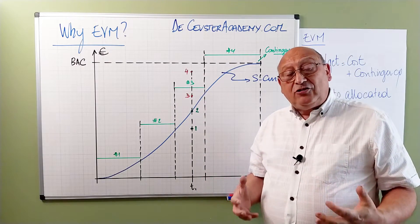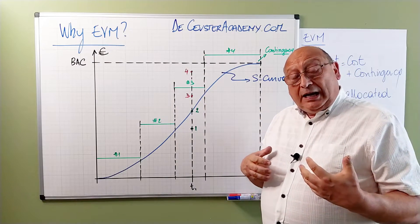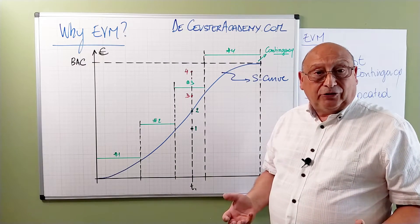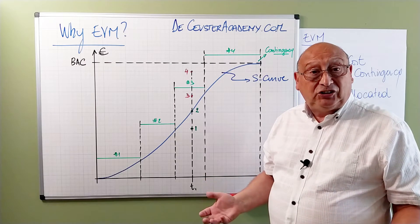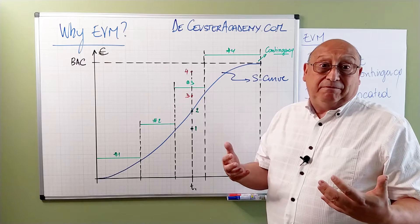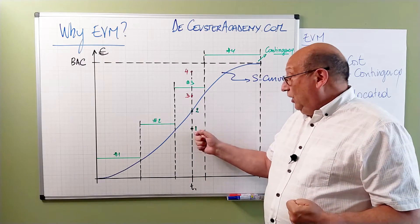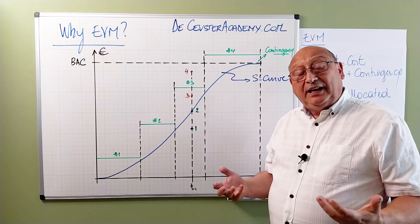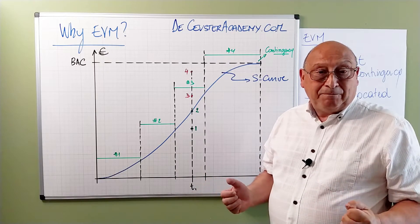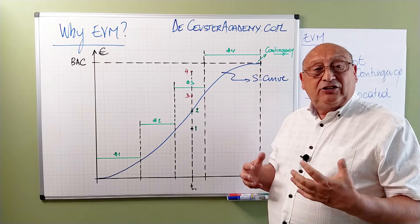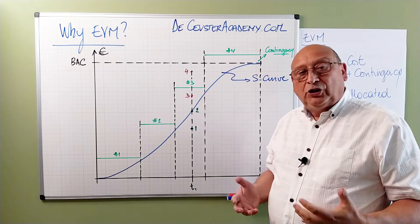Now just with this information we cannot interpret exactly what it means. Is point one good? Is point two good? Imagine that you're performing better - you're making more deliverables. Then the S-curve will move to the left, it will be steeper, and we will be spending money faster. That's positive, but budget-wise we see this as negative because I'm spending more money than I planned. On the other hand, for point one, it may be that we are spending less money because we are having delays. Just with this information, it's not possible to understand these things, and that's why project managers have introduced the concept of Earned Value Management.